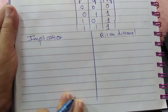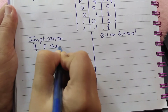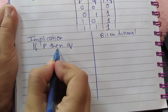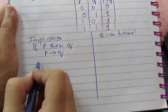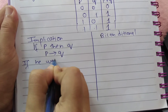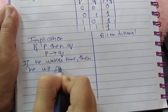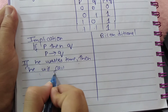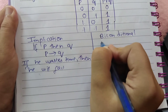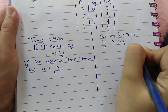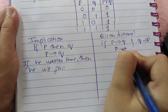Next is implication, which is a compound statement of the form 'if P then Q,' also written as P implies Q. For example: if he wastes time, then he will fail. If P implies Q and Q implies P, this type of statement is called a bi-conditional.